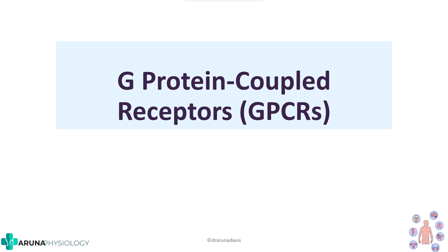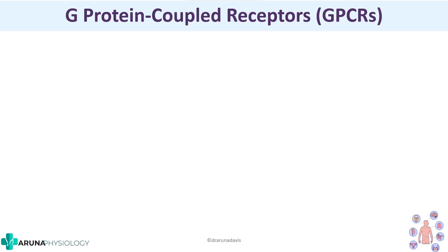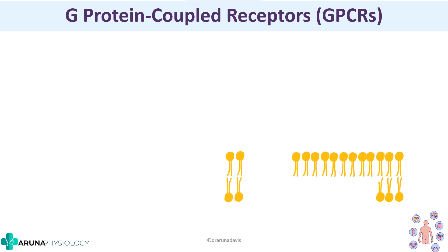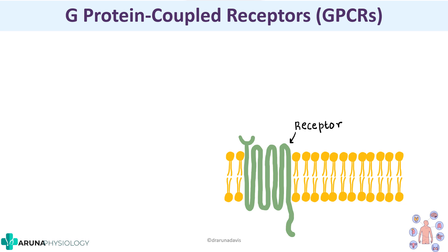Hi all, in this video we are going to see about G-protein coupled receptors. G-protein coupled receptors are receptors that are important for hormonal action. From an exam point of view, this question can be asked as a short essay, so it is very important that we have an idea about how these G-proteins work. G-protein coupled receptors are basically receptors that are present on the cell membrane surface, and as you can see, the receptor spans the cell membrane almost 7 times.